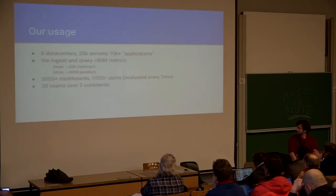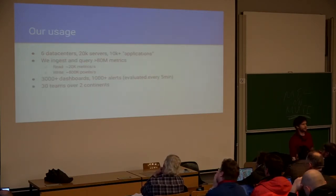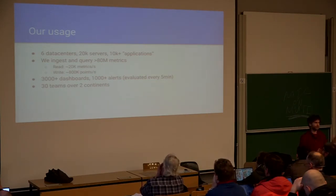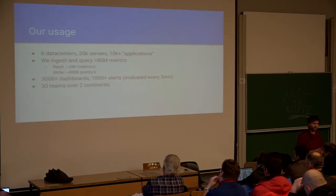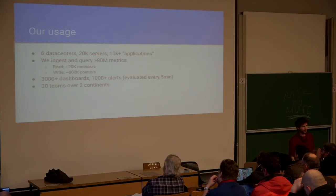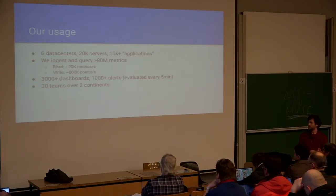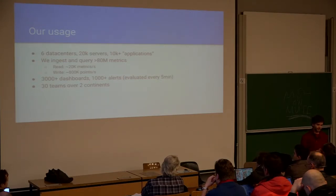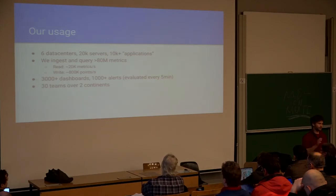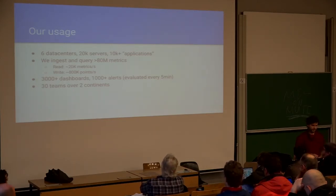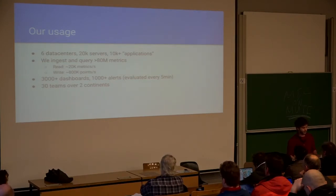How do we use Graphite? We are pretty big — not as big as Amazon — but we have 6 data centers and tens of servers and applications. We have close to 1 million metrics, we read 220k metrics per second, and we write 800k metrics per second. Most importantly, when we tried to scale Graphite, we already had thousands of existing dashboards on Grafana written by 30 teams distributed over two continents. You can't just say Graphite doesn't work anymore and switch to something else. So our big constraint was: we need to fix Graphite, and we must keep those existing dashboards working.